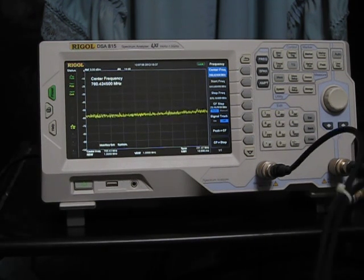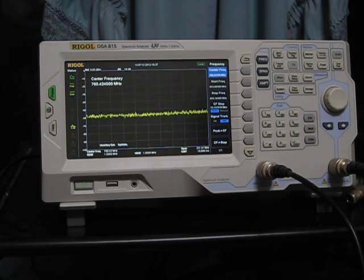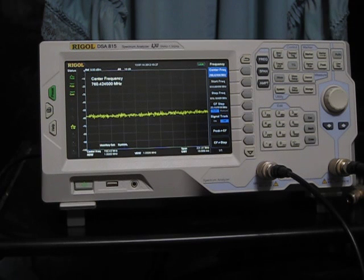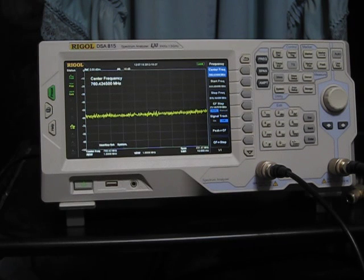First thing we did is we're going to hook the cables that we're going to use to do this. We've hooked the tracking generator output to the input so that we can normalize the spectrum analyzer with this cable arrangement. That's a very important thing to do.